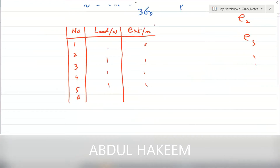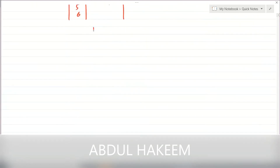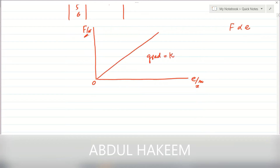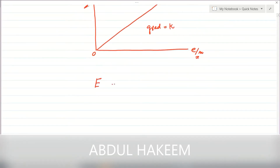Extension and load are both recorded. After recording, we sketch the graph with force (load) on the y-axis and extension in meters on the x-axis. The graph will be a straight line because extension and force are directly proportional. We then calculate the gradient of the straight line, which equals k, the material constant.